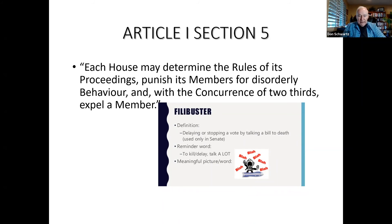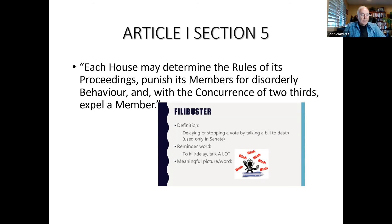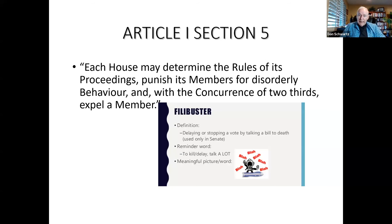Today, a bill must have the support of 60 senators — a simple majority is not enough. Article I, Section 5 says each house can punish its members for disorderly behavior. When Senator Joe McCarthy was running his witch hunt in the early 1950s, he fell out of favor with the Senate and the Senate voted to censure him — meaning that when he got up to speak, nobody had to listen and members could walk out.